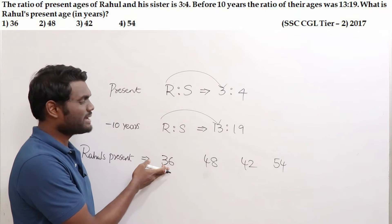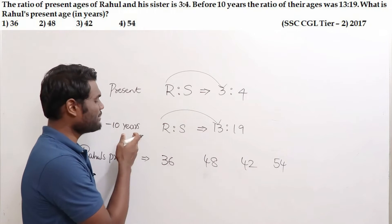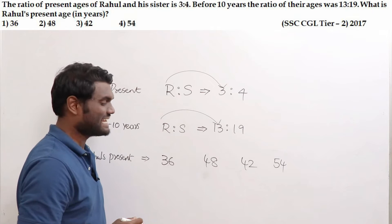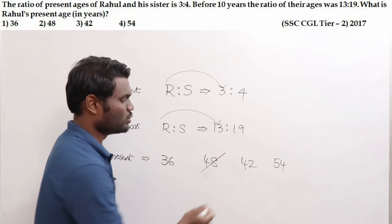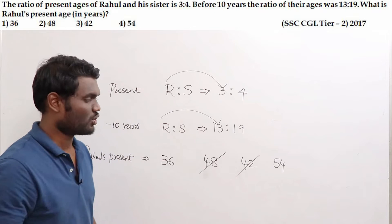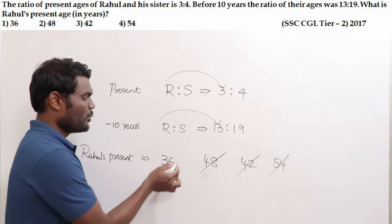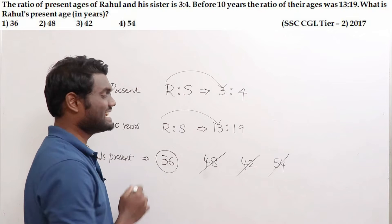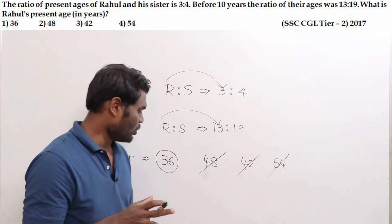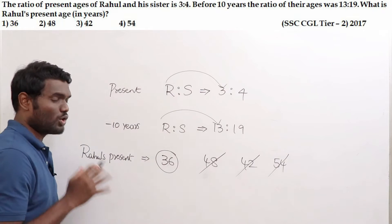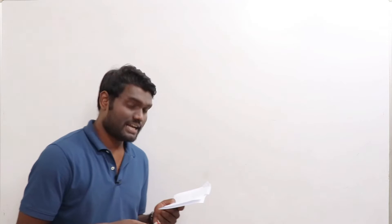36 minus 10 is 26 — is 26 a multiple of 13? Yes. 48 minus 10 is 38 — is 38 a multiple of 13? No, wrong answer. 42 minus 10 is 32 — is 32 a multiple of 13? No, also wrong. So the answer for this question is 36 years. Just by concentrating on the question you can mark these answers — solving becomes really simple.